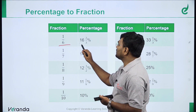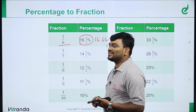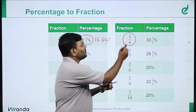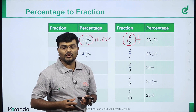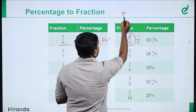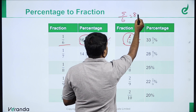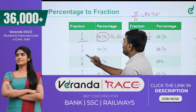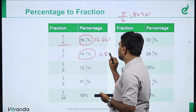1 by 6 is 16.66% or 16 2/3 percent — both are the same. 2 by 6 simplifies to 1 by 3, which is 33.33%. 3 by 6 simplifies to 1 by 2. 4 by 6 simplifies to 2 by 3. 5 by 6 is 83.33%.